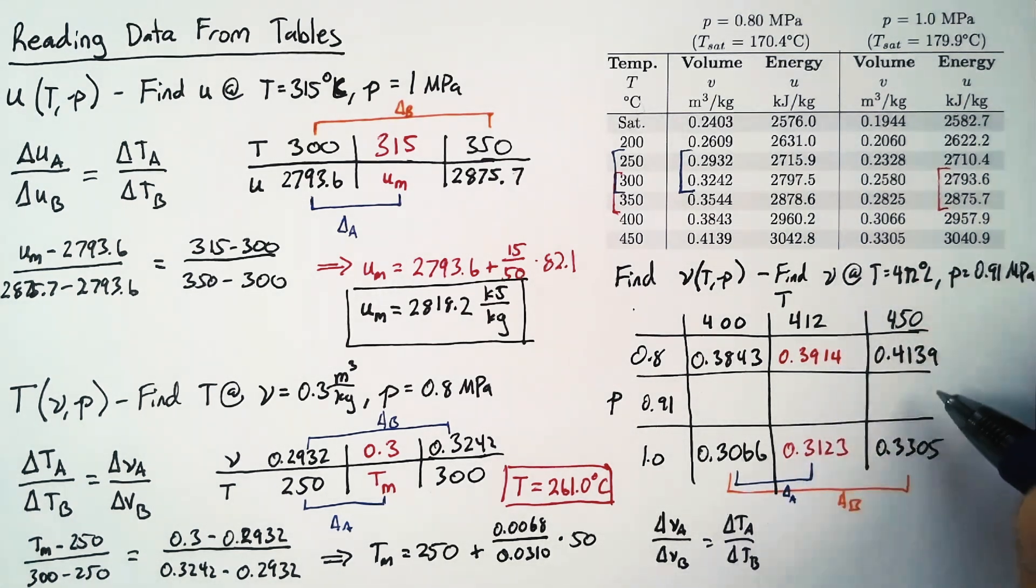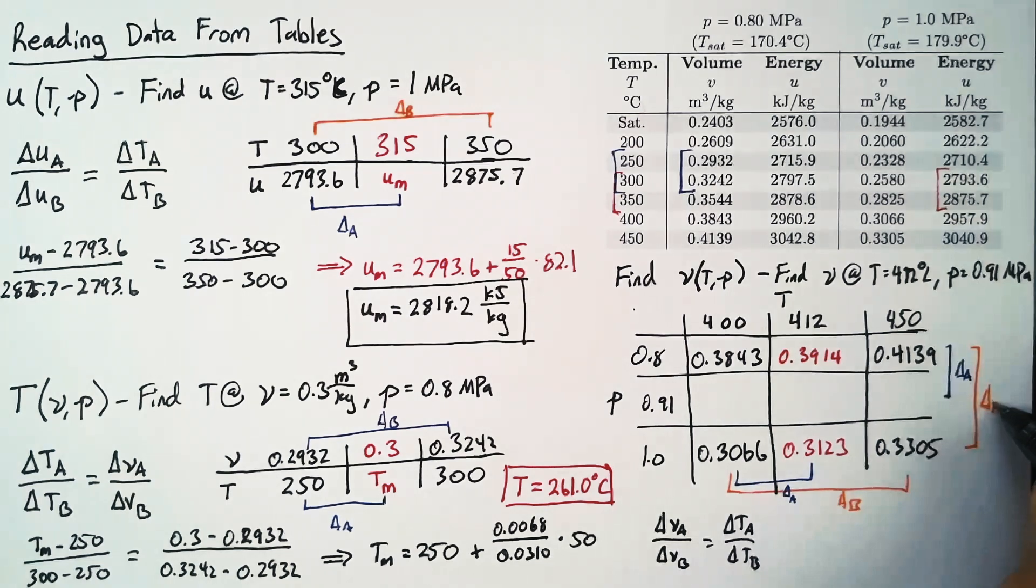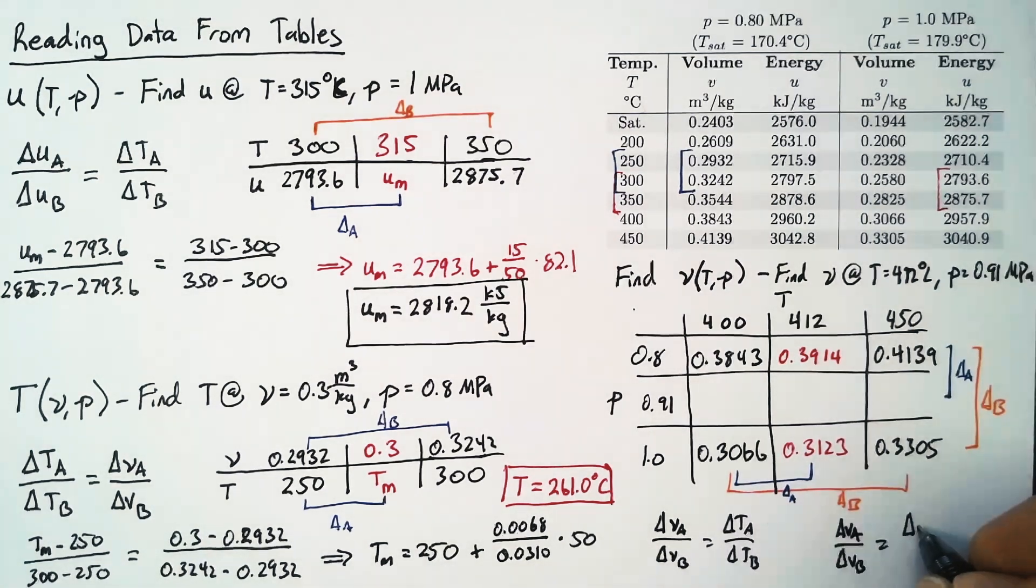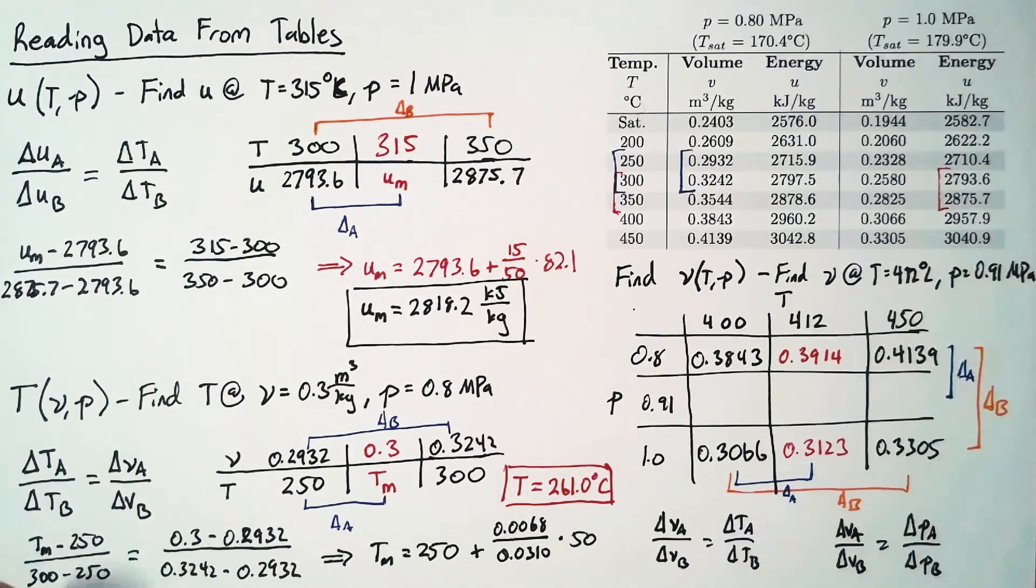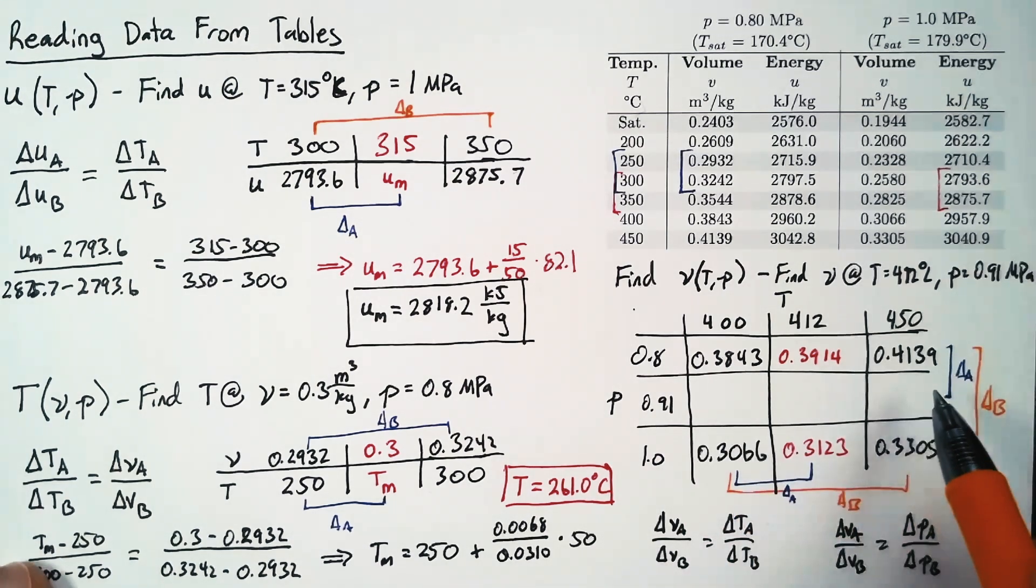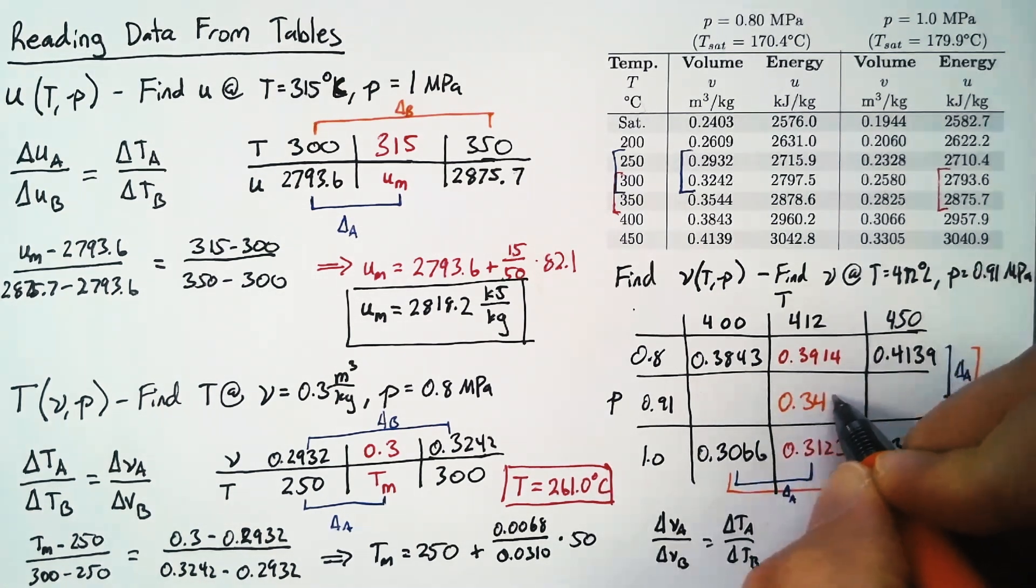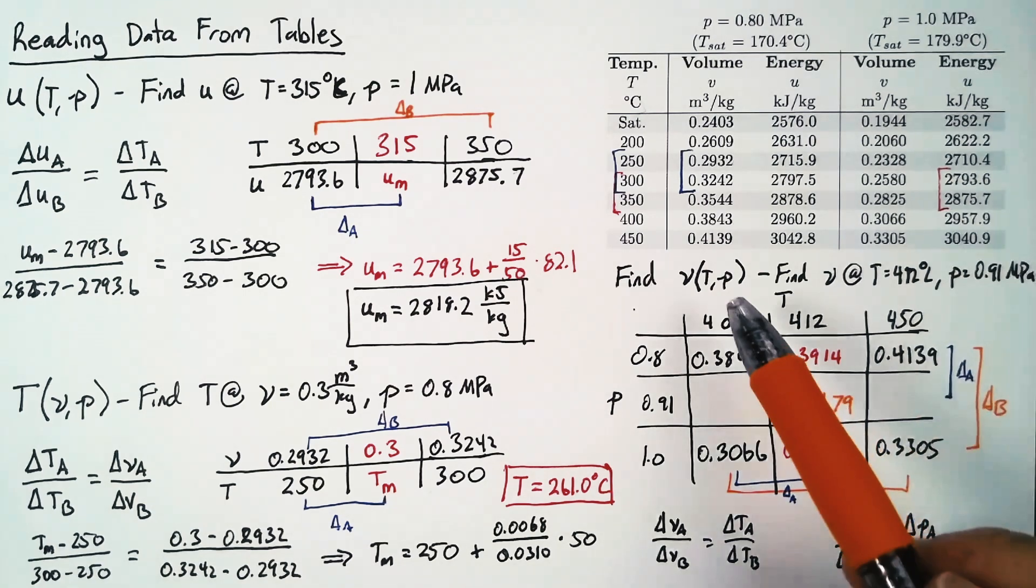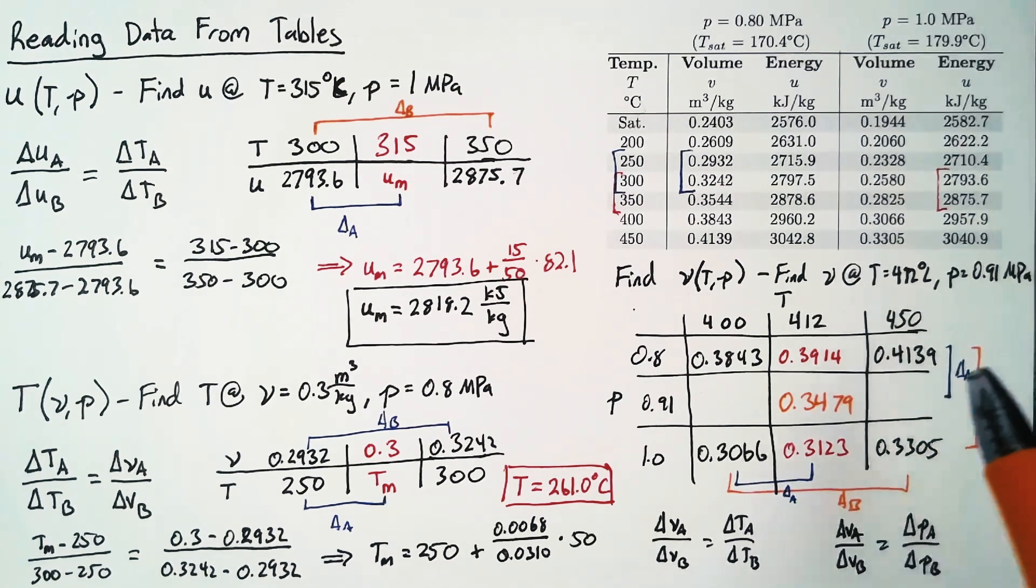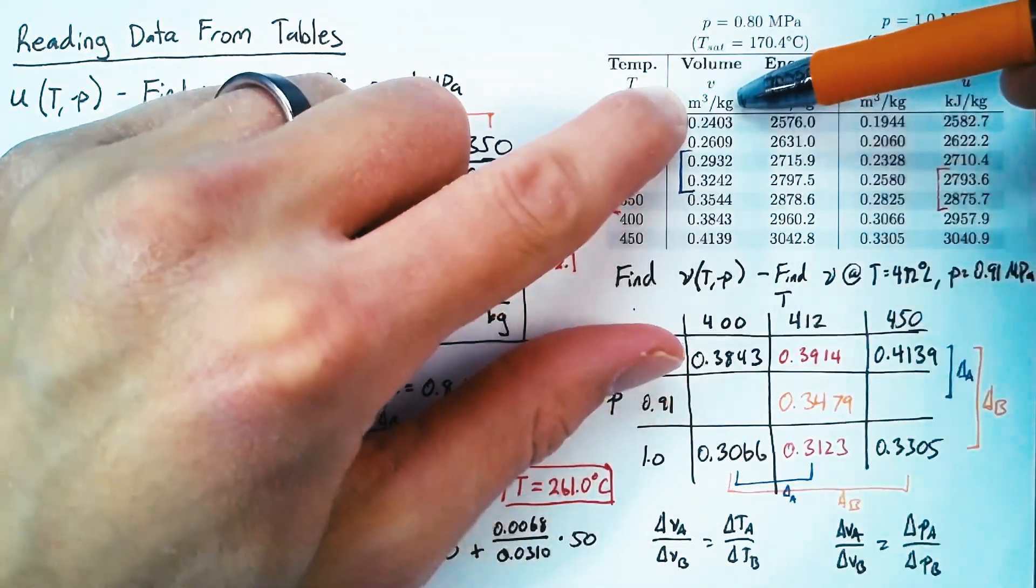Using Δva/Δvb = ΔTa/ΔTb, we get v=0.3914 at T=412 and P=0.8, and v=0.3123 at T=412 and P=1.0. Now we do the same for pressure, using Δva/Δvb = ΔPa/ΔPb to find the final value: v=0.3479. Our final result is that the specific volume at 412 Celsius and 0.91 megapascals is 0.3479 meters cubed per kilogram.